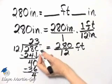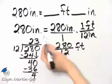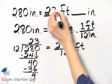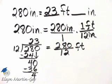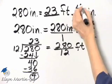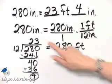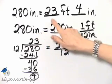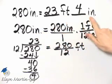Now this is how many whole 12s there are. So this is how many whole feet there are in 280 inches. And then our remainder is still in inches. So I'll place that right there. 280 inches is 23 feet 4 inches.